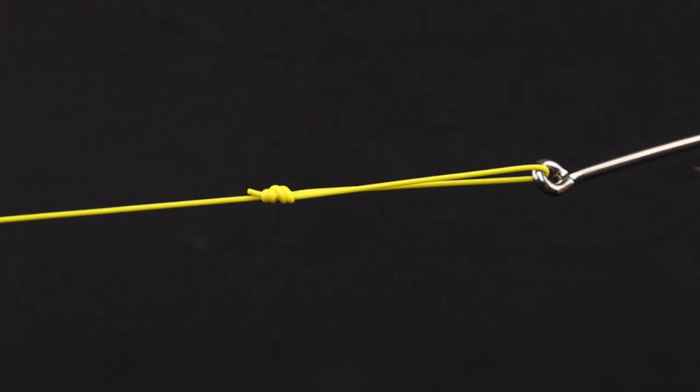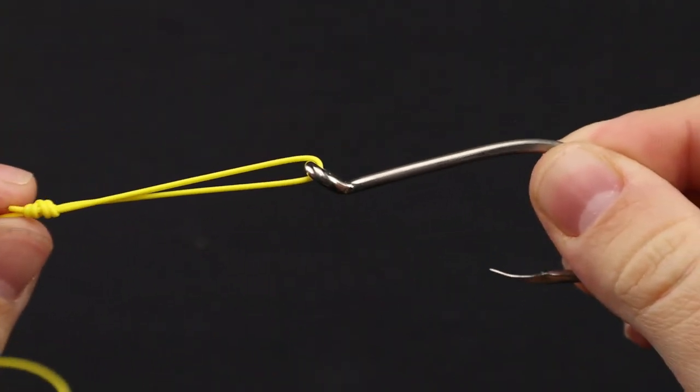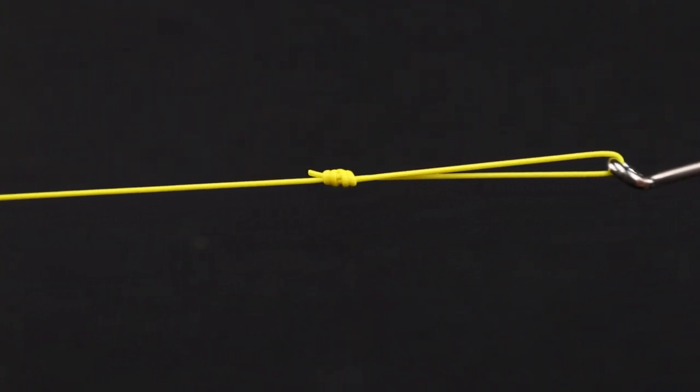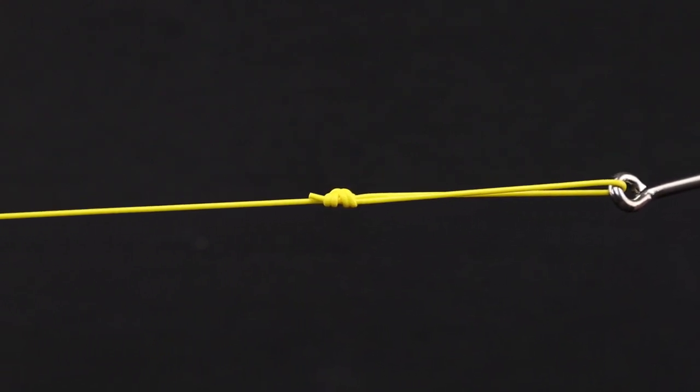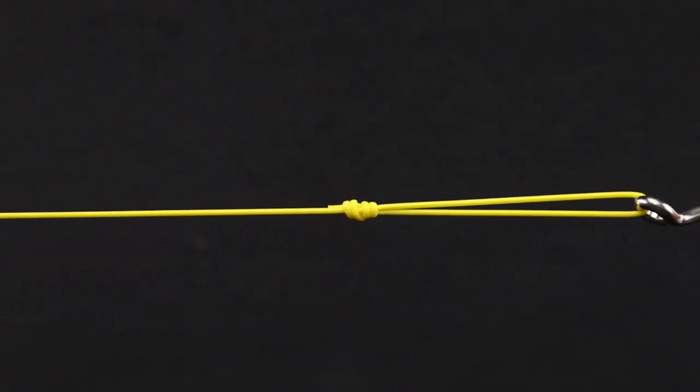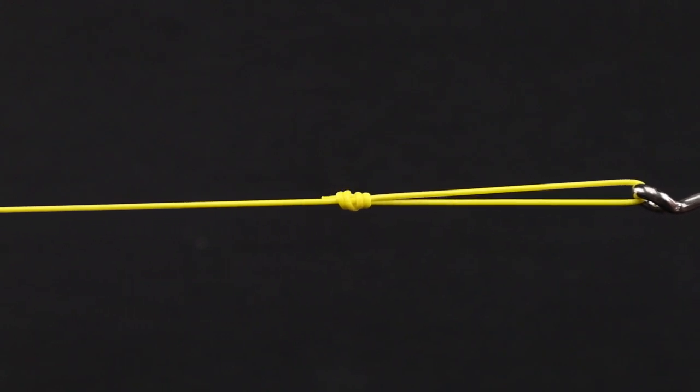And that's how you tie the surgeon loop with an item you want to connect to it. Hope this video was helpful. If you have any questions, please leave a comment down below. If you liked the video, please hit that like button. And until next time, thanks for watching.